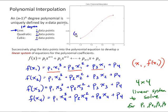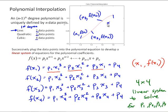Once we solve for p1, p2, p3, and p4, we can use that to evaluate intermediate points. So our four data points — x1 f(x1), x2 f(x2), x3 f(x3), and x4 f(x4) — are used to find the equation of the cubic that passes through all four points. Then we can use that cubic to calculate an intermediate value anywhere within the range of our polynomial.